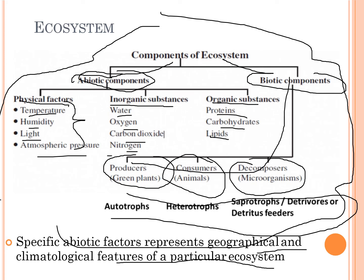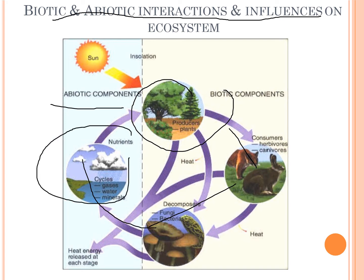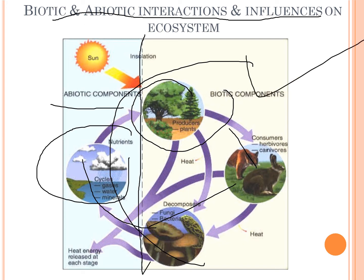Specific abiotic factors represent the geographical and climatic features of particular ecosystems. Looking at biotic and abiotic interactions: we have plant producers as the living things, then consumers, then decomposers, and the nutrient cycle continues. The sun gives energy to plants for growth; plants produce food consumed by consumers. After the death of consumers, they are decomposed by fungi and bacteria, known as decomposers or saprotrophs. Then the cycle repeats.